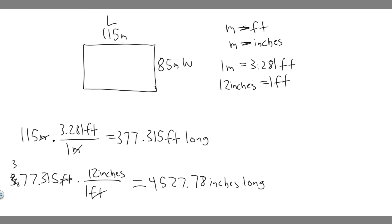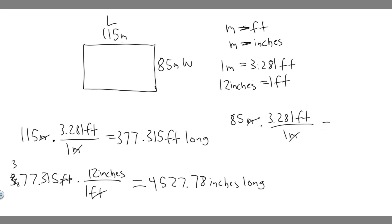Now let's do the width. We're going to do the same exact thing but with this value instead. So 85 meters — we want to convert it into feet. We know there are 3.281 feet for every one meter. The meters will cancel, and if you multiply by this you'll just get the feet. So 85 times 3.281 gives you 278.885 feet.